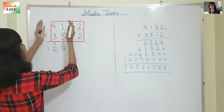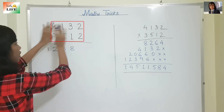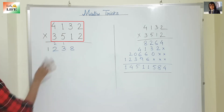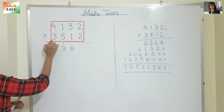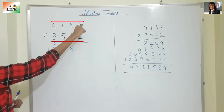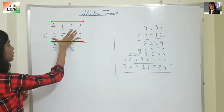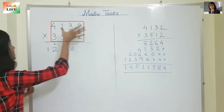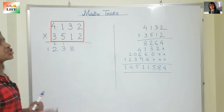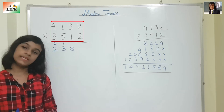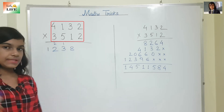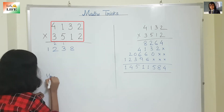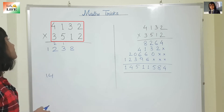Now we have four columns — all four columns. We are going to multiply this with this and this with this. 3 into 2 is 6, 4 into 2 is 8. 8 plus 6 is 14.